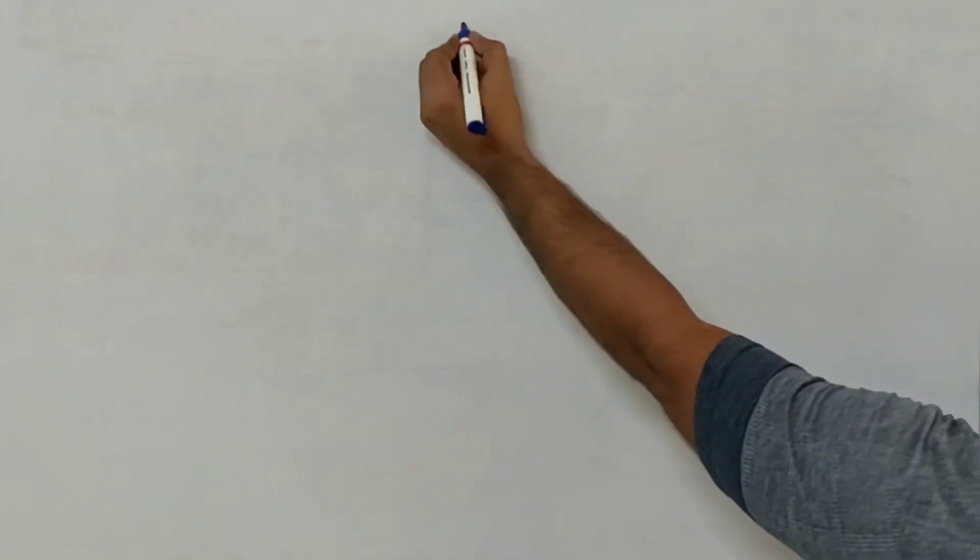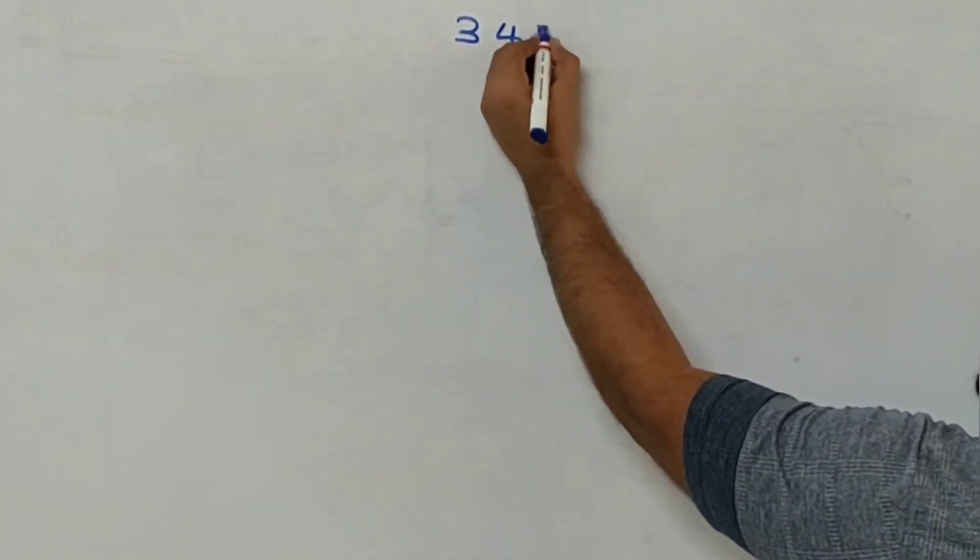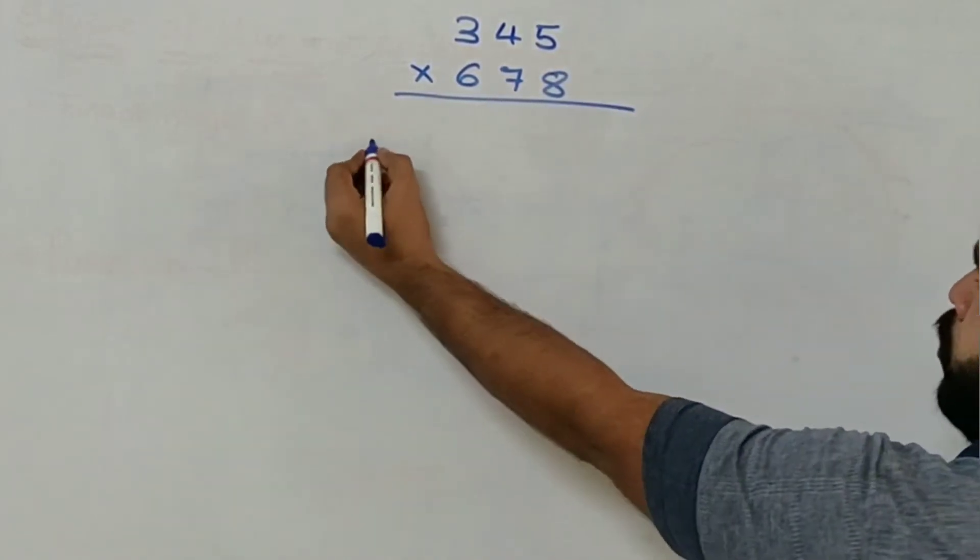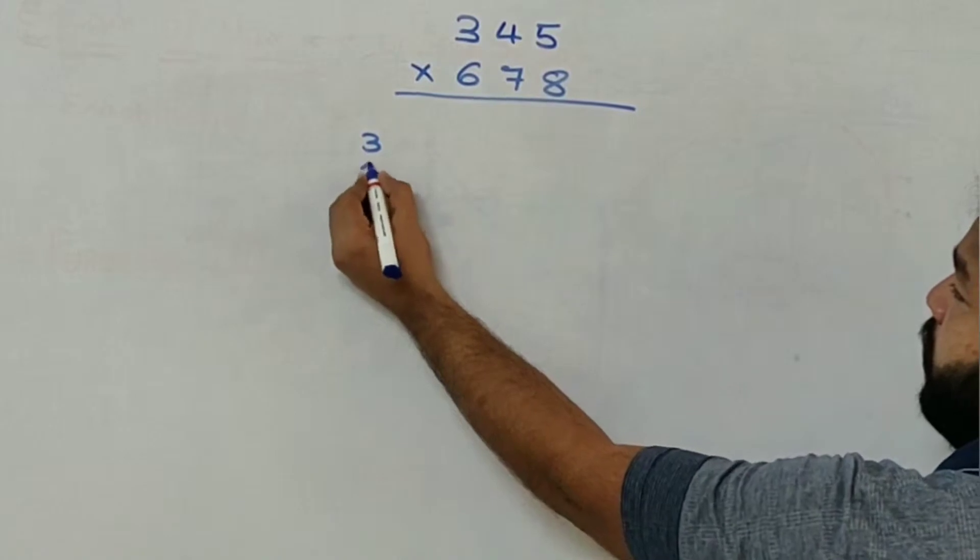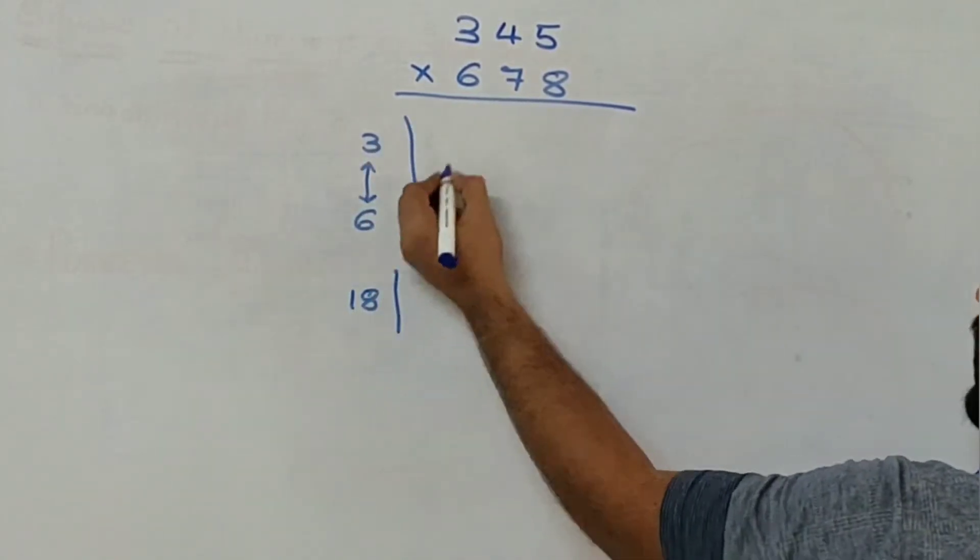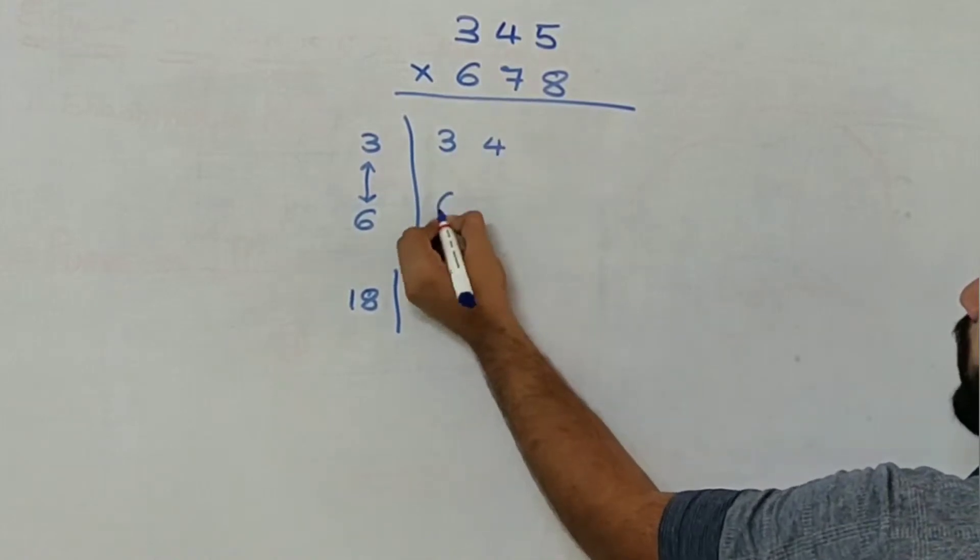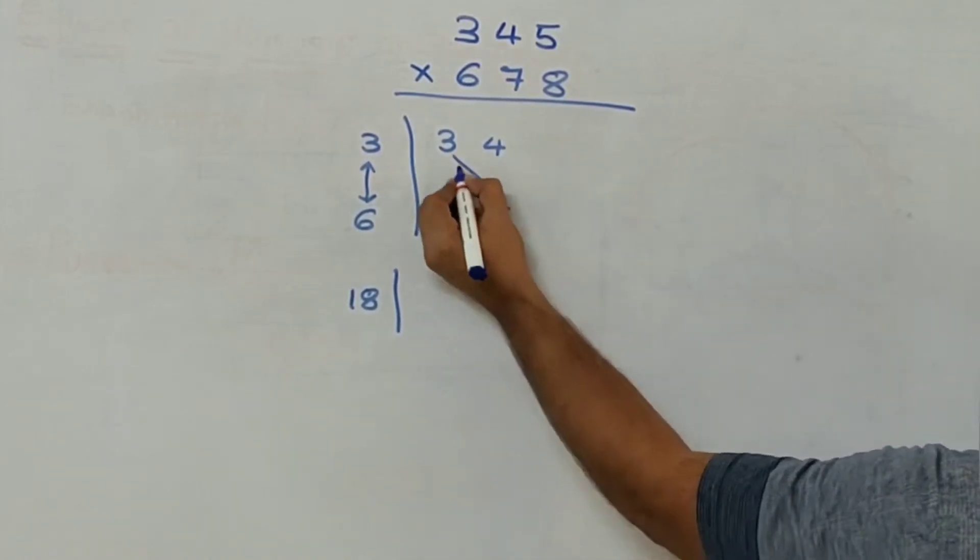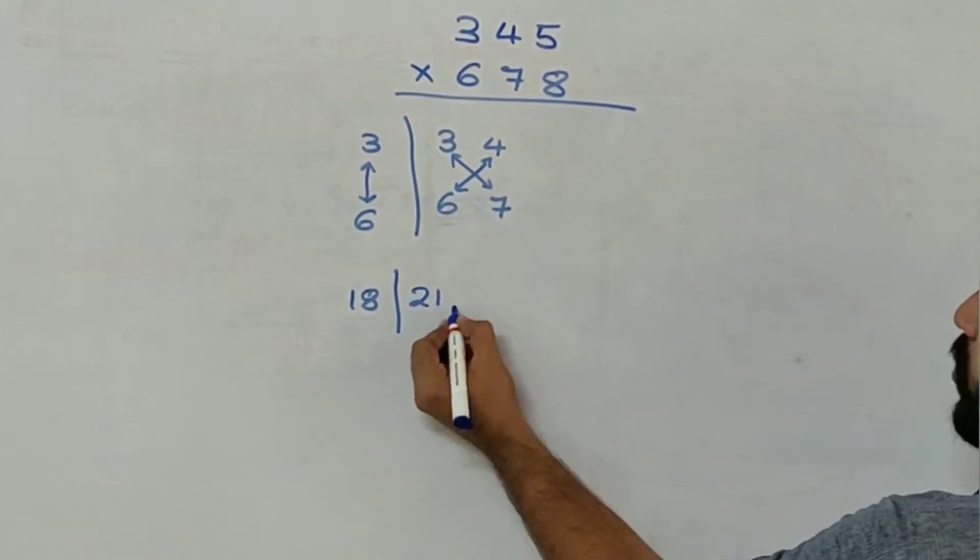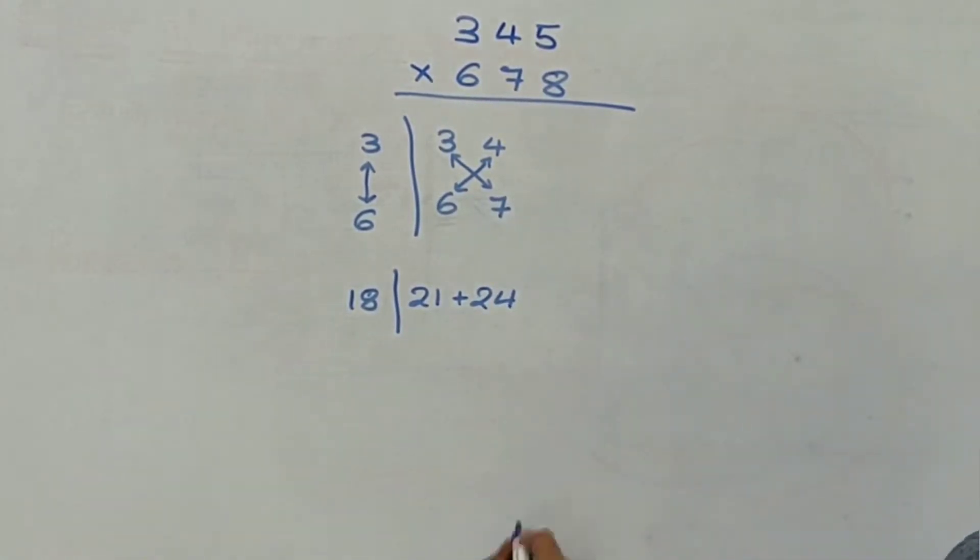So let's begin our first sum for today which is 345 and 678. So first we will group 3 and 6 together. So 6 threes gives me 18. Then I will have 3, 4, 6, 7. 3 into 7 and 6 into 4. So 3 into 7 is 21, 6 into 4 is 24.